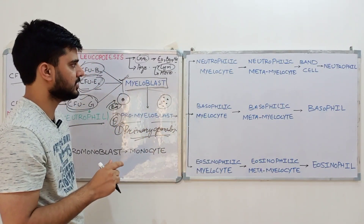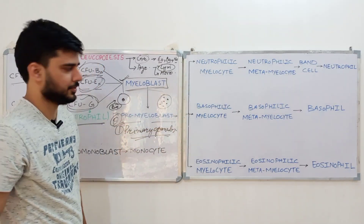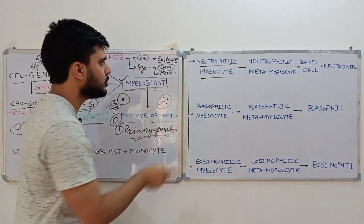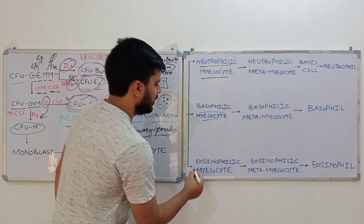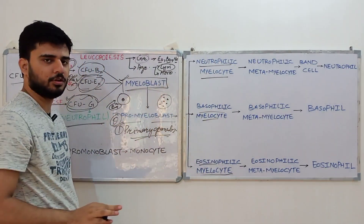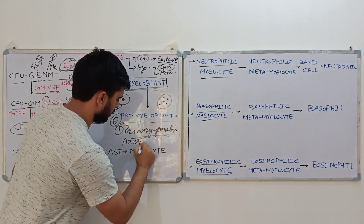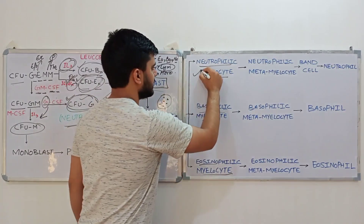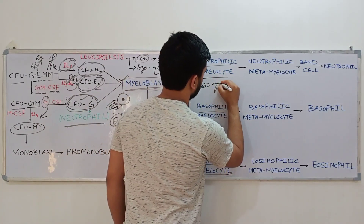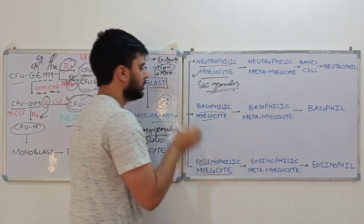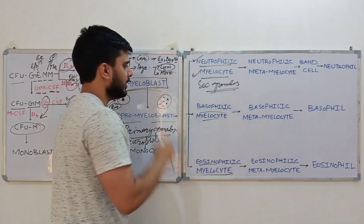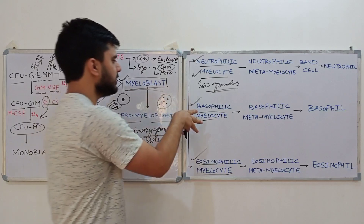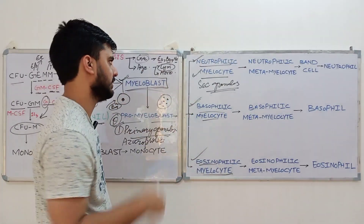After the promyelocyte, the next stage is the myelocyte. From this point, we can differentiate between the three types: neutrophilic myelocyte, basophilic myelocyte, and eosinophilic myelocyte, each with their own specific secondary granules. In the myelocyte stage, secondary granules are formed — neutrophilic granules for neutrophils, basophilic granules for basophils, and eosinophilic granules for eosinophils. This is the first stage at which we can differentiate between different granulocyte types.